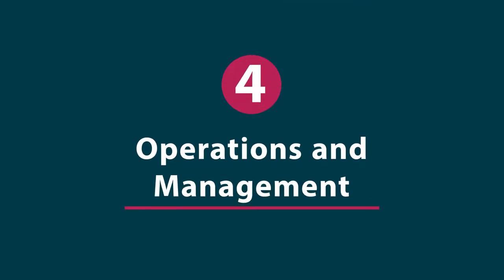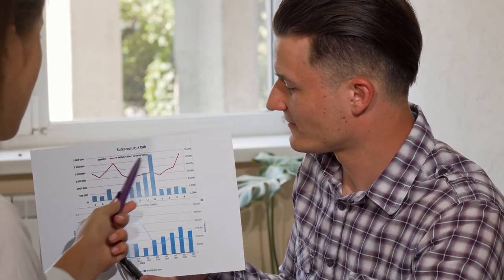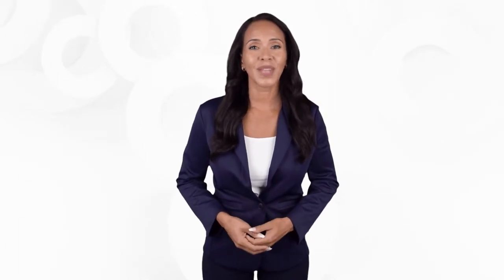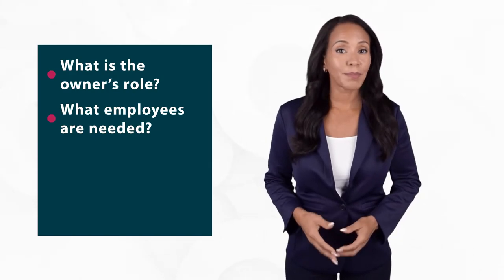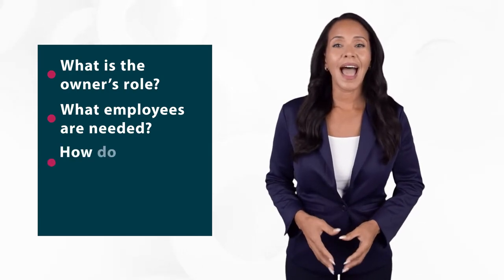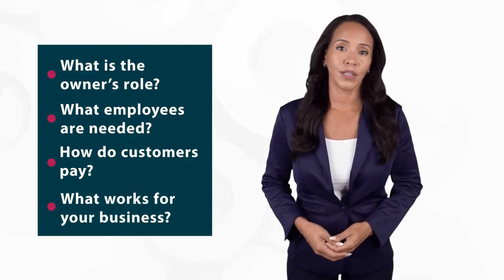Point four: operations and management. This section details the day-to-day operations for effectively operating the business. It illustrates to investors and lenders that you know how to run your business and deliver your product or service. One of the most critical yet intangible requirements for a successful business is the management skill to control and direct the business once it is operating. In your business plan, you should discuss key operational and management issues relevant to your business — such as the owner's role in operations, the number of employees required, their basic job functions and wages, how and when customers pay, and for existing businesses, what you have learned about operating your business successfully.